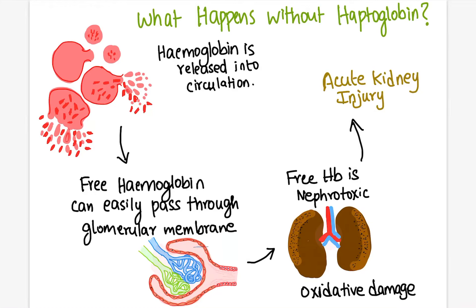Let's see what happens if haptoglobin is not present in the body. Imagine there is intravascular hemolysis going on — the blood cells are ruptured and free hemoglobin is released into the circulation. These free hemoglobins will go to the kidney and can easily pass through the glomerular membrane. But free hemoglobin is nephrotoxic; kidneys cannot tolerate it, and it causes oxidative stress, leading to acute kidney injury and inflammation.